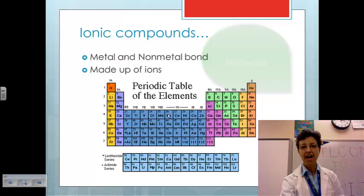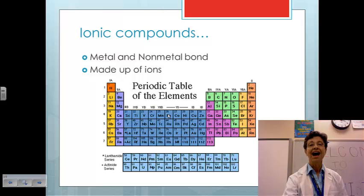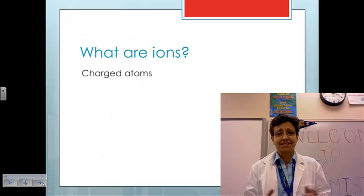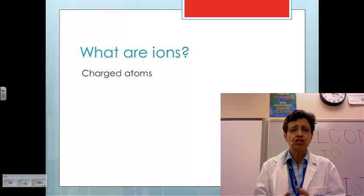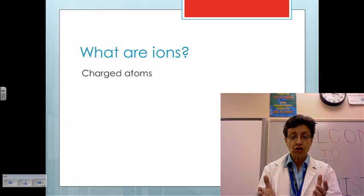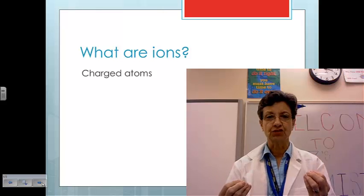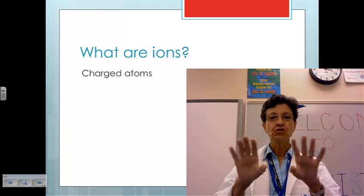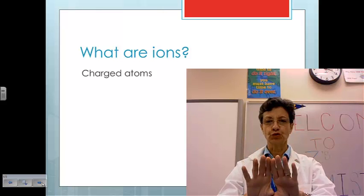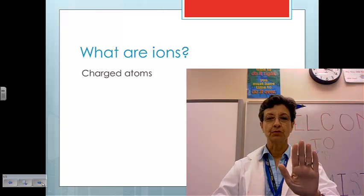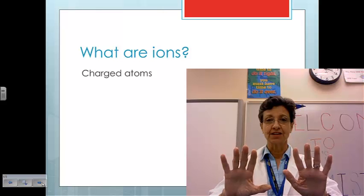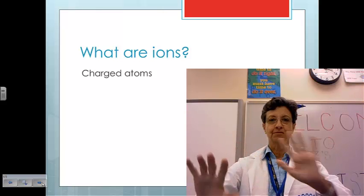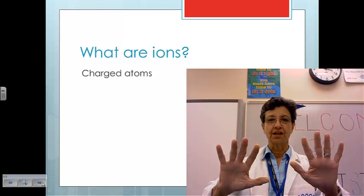Ionic compounds are made up of atoms, but specifically, they are made up of ions. What are ions? They're simply charged atoms. They are charged because they have a number of electrons that is different from the number of protons. When you start out, an atom is neutral, meaning it has the same number of protons as it has electrons. Say five and five. Five protons and five electrons.